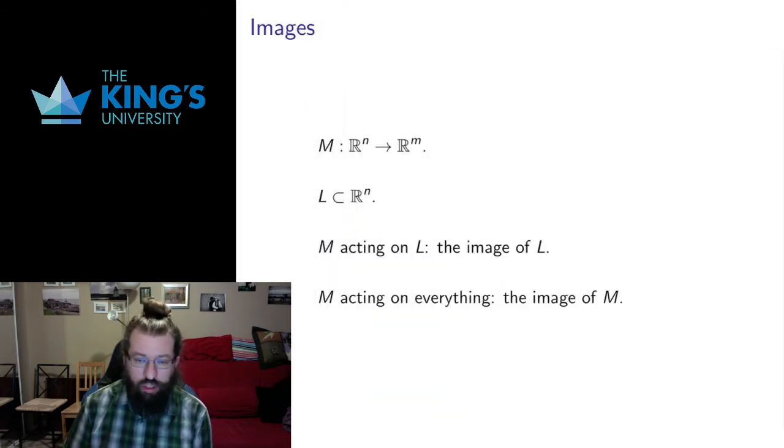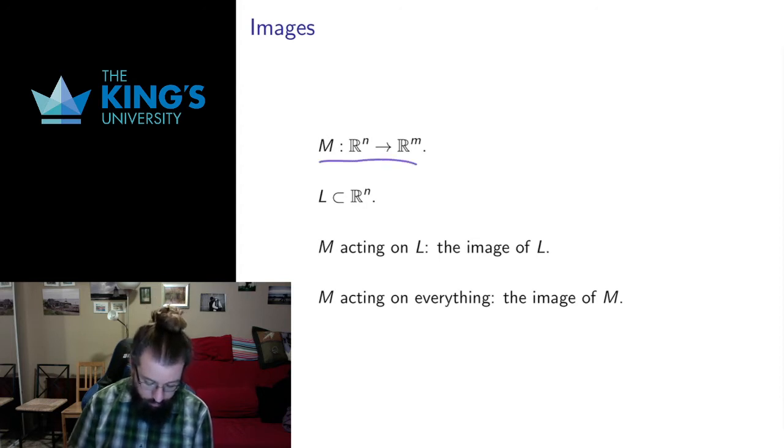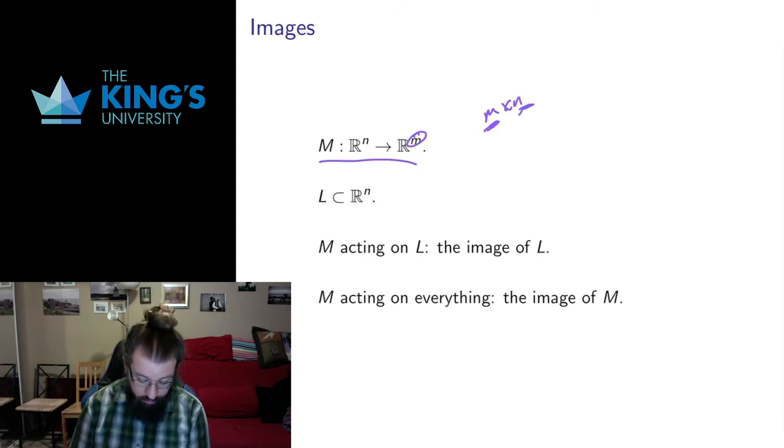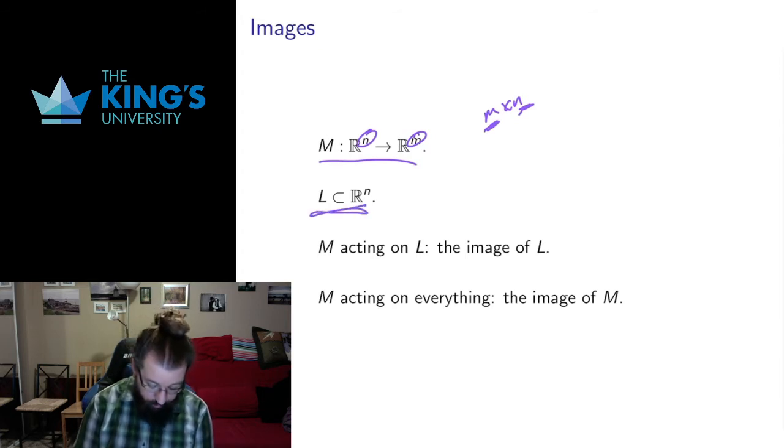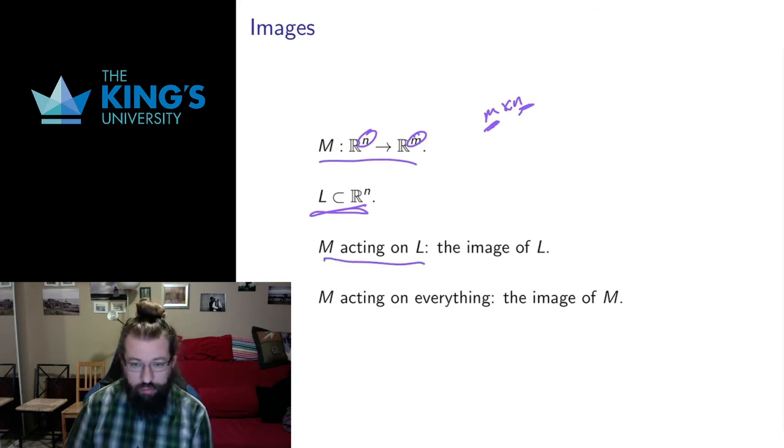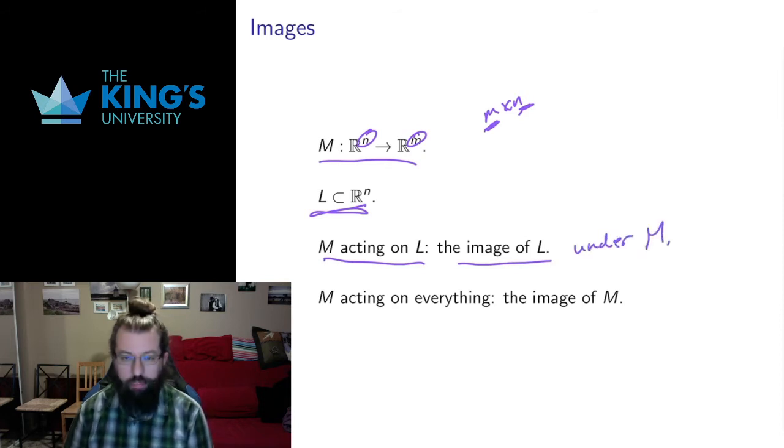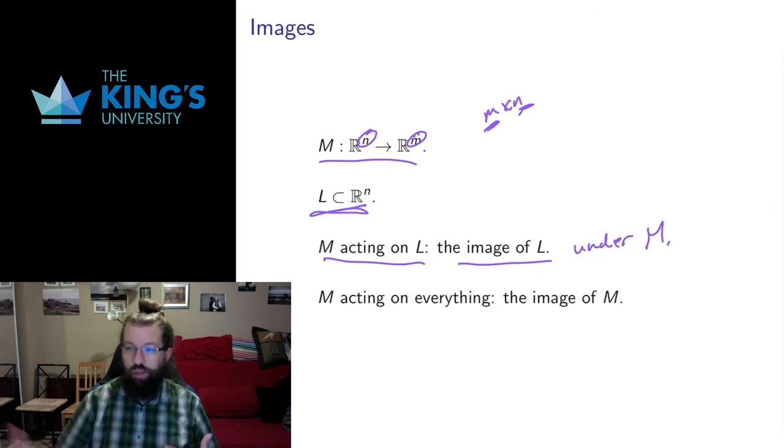Let's review the terminology here first. So if I have a matrix that goes from Rn to Rm, so that's going to be an m by n matrix. The size, the number of rows, the number of columns, the number of rows is going to be the domain of the target, the number of columns is going to be the domain where we start. So if I have some affine or linear subspace in the domain then the matrix can act on this subspace. What I would be asking then for is the image of L, if I wanted to be more specific I would say the image of L under the matrix M. You have a line, what's the image of that line under the transformation? You have a plane, what's the image of that plane under that transformation?